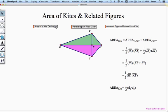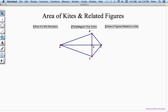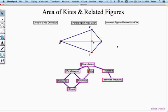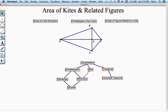Okay, but this is a video about the area of kites and related figures. So what other figures should we be considering? Well, let's go back to a flow chart we saw in Chapter 5. You'll recall that all quadrilaterals could be categorized as parallelograms, kites, or trapezoids.